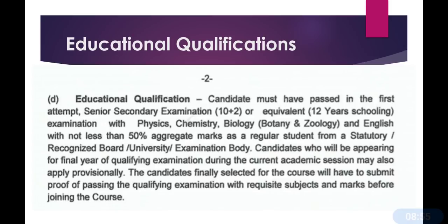To summarize education qualification: 12th must be complete with Physics, Chemistry, and Biology stream plus English as an additional subject. The aggregate marks of all 4 subjects must be 50% or above. If you have 5 subjects including Physical Education, neglect Physical Education and calculate the percentage of the 4 core subjects. If your marks are above 50%, you are eligible. You must be a regular student, must have cleared 12th in the first attempt. 12th appearing students can also apply.